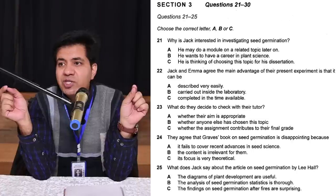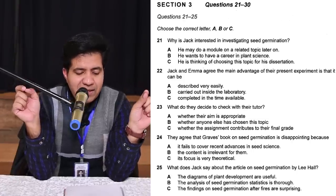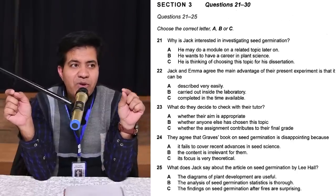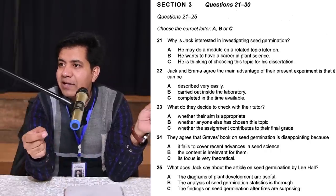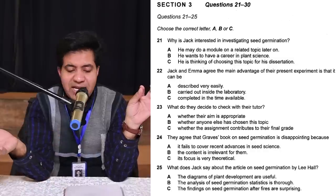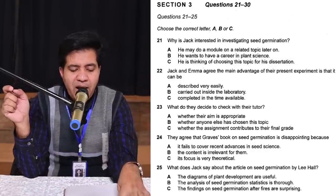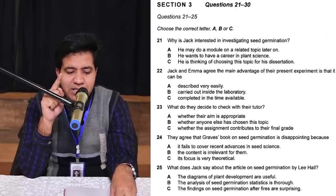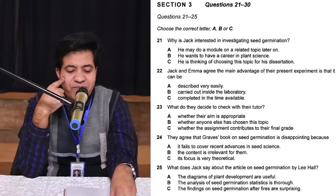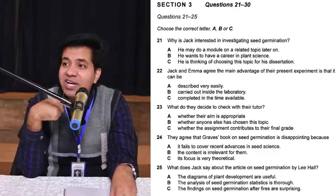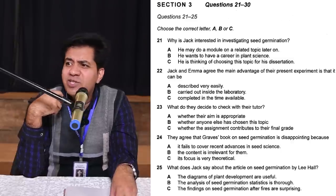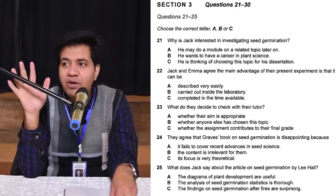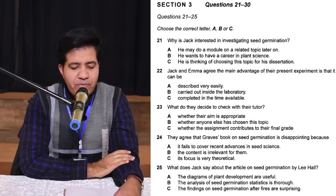Why is Jack interested? There are three reasons. Option A: do a module on a related topic later on — so if he says 'in the third semester I'm going to study a course on seed germination,' then A is right. Option B: wants to have a career in plant science. The lady may say, 'Jack, you want to have a career in plant science — that's why you're interested in seed germination,' but he'll say 'partially' — that's not the real reason. That means it's a trap. Focus on the traps in multiple choice.